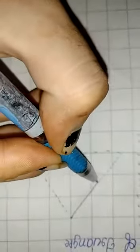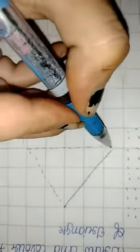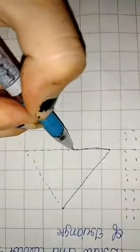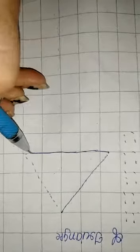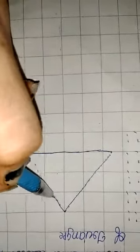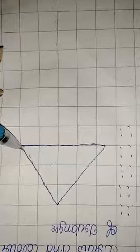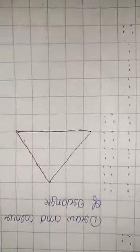Draw and color the shape of triangle. Okay. Draw this shape. Trace this dot. Neat and clean. And color it. Now complete your work and color it.